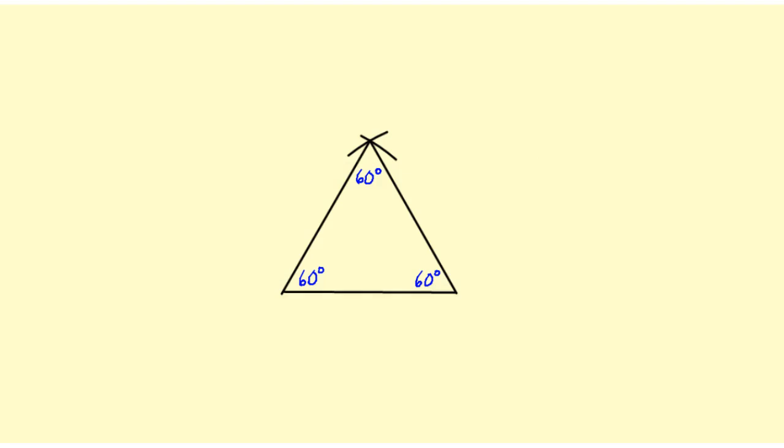Before we construct a 60 degree angle, I want to just review a couple facts. First of all, the angles of a triangle, any triangle, always add up to 180 degrees.